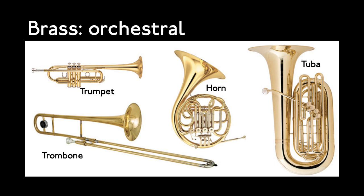Brass instruments come in different shapes and sizes but are all played in the same way. These are the brass instruments that are commonly used in an orchestra, ranging from the trumpet, which is the highest, down to the tuba, which is the lowest. The brass section sits near the back of the orchestra because they can play very loud, and most brass players very much enjoy making a lot of noise.